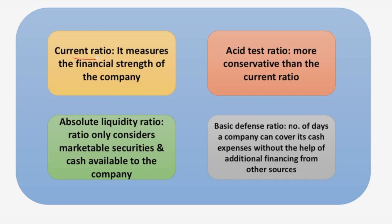Let's discuss the current ratio. This ratio measures the financial strength of the company, and generally 2:1 is treated as the ideal ratio, though it depends on industry. The formula is current assets divided by current liabilities. Current assets include stock, debtors, cash and bank — assets which can be converted to liquid cash within 12 months. Current liabilities are amounts due to be paid to creditors within 12 months, including creditors, short-term loans, bank overdrafts, etc.